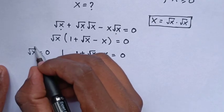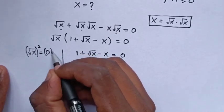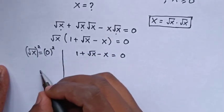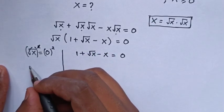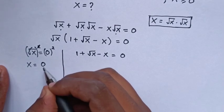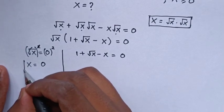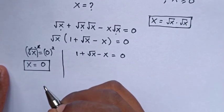To find the value of x from the first case, square root of x equals 0, we square both sides, and the square and square root cancel, giving x equals 0. So x equals 0 is one of the values of x.